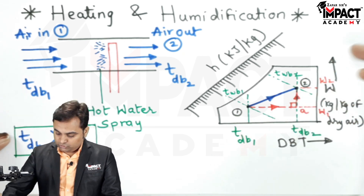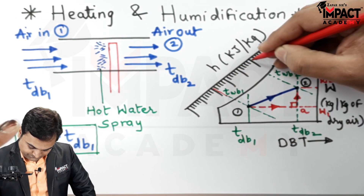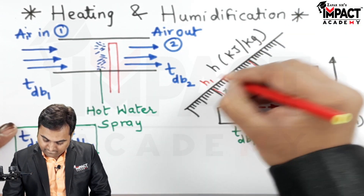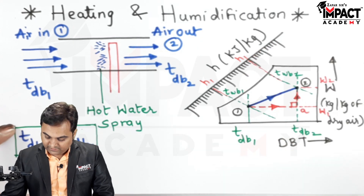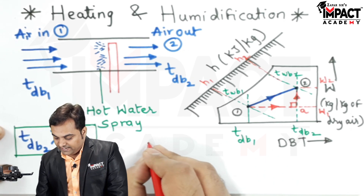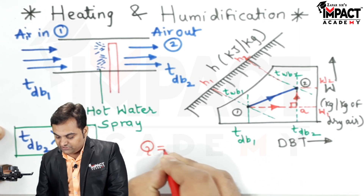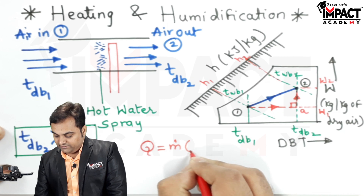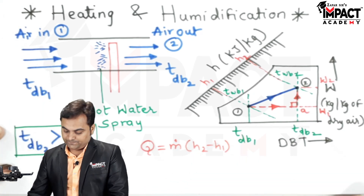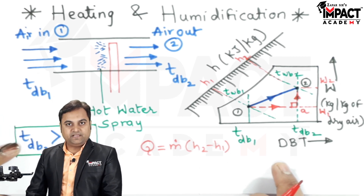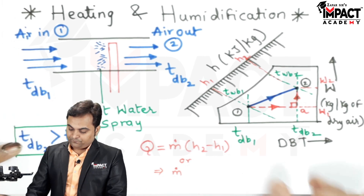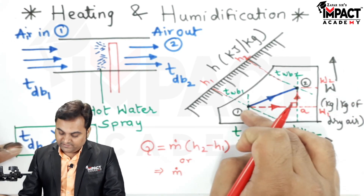To find the enthalpy, plotting points 1 and 2 on the specific enthalpy scale gives us h1 and h2. The total heat added during heating and humidification is given by the mass flow rate of air multiplied by the enthalpy difference: Q = ṁ × (h2 − h1). This can also be written as ṁ × (ha − h1) for the sensible heating component.